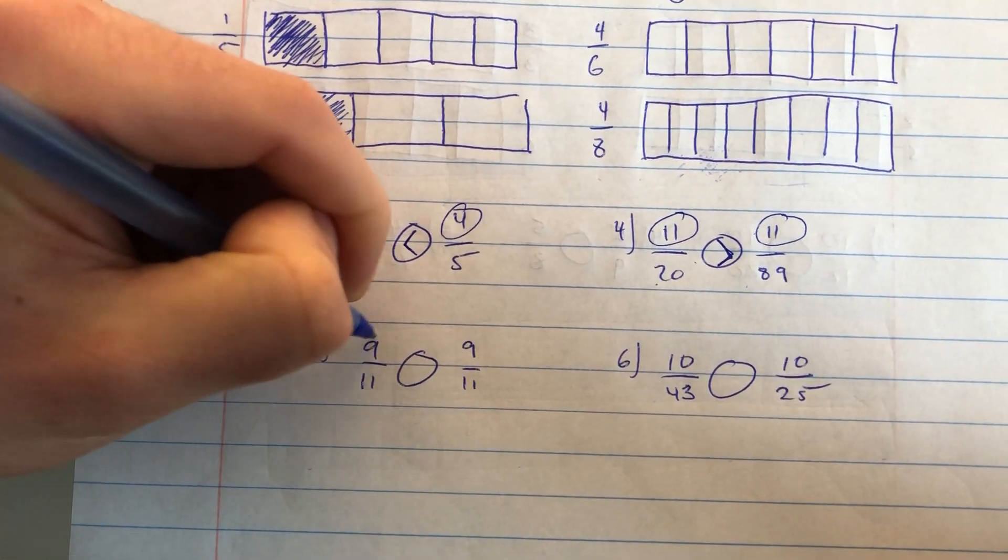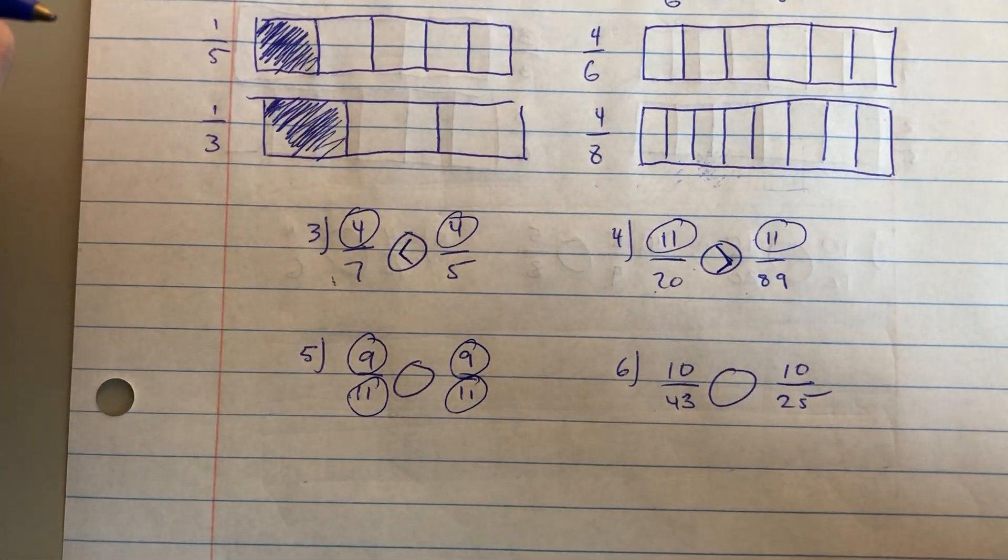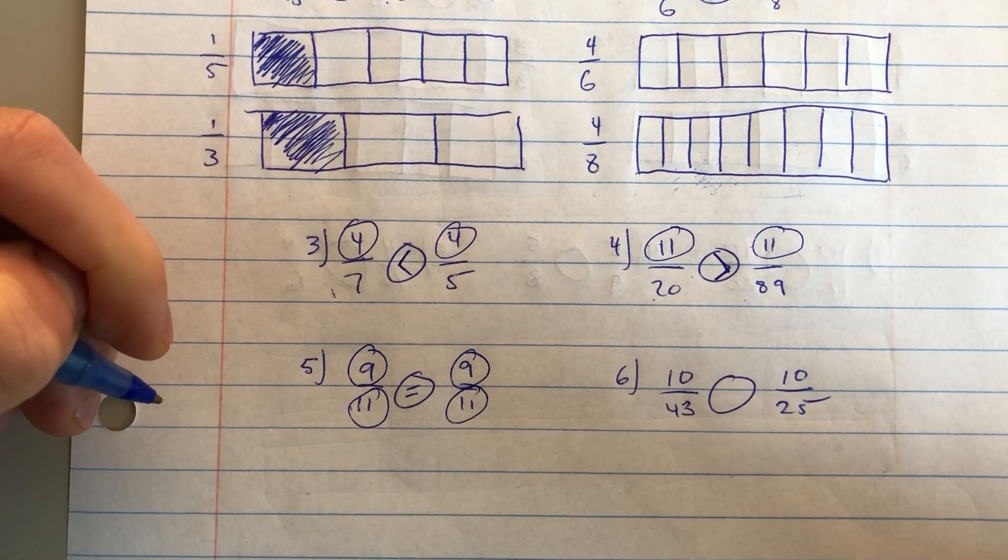Looking here, I have the same numerator, but I also have the same denominator, eleven and eleven in my denominator. These fractions are exactly equal, so I'll put an equal sign.